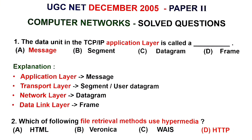UGC Net December 2005 Computer Networks solved questions. First: the data unit in the TCP/IP application layer is called answer A: message. If you change the layer, you change the answer. Transport layer is called segment or user datagram. Network layer is called datagram. Data link layer is called frame. Physical layer is called bit.